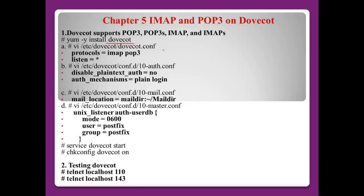After that, we need to configure four files. First, open /etc/dovecot/dovecot.conf. Here we need to configure two lines. First, protocols - let's configure to support only two protocols: IMAP and POP3. And for the listen line, we use star, which means support only IPv4.